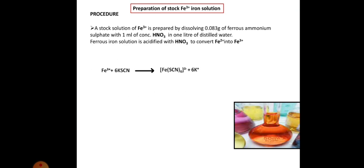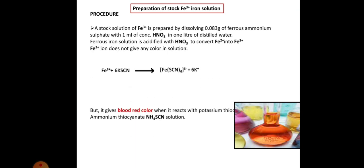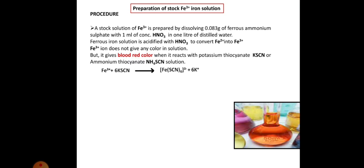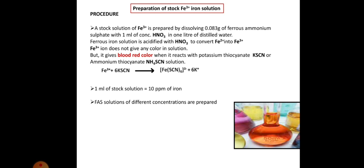The stock solution is made colored by treating it with potassium thiocyanate or ammonium thiocyanate. When some amount of the stock solution is treated with either of these reagents, a blood red colored solution is obtained. This is due to the formation of a complex — for example, when Fe³⁺ is treated with potassium thiocyanate, potassium ferric thiocyanate is formed, which is blood red in color.